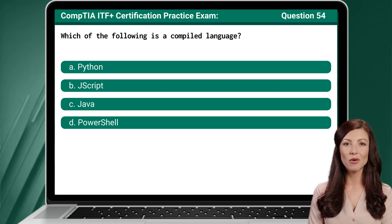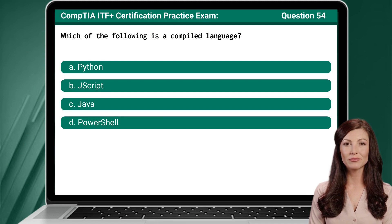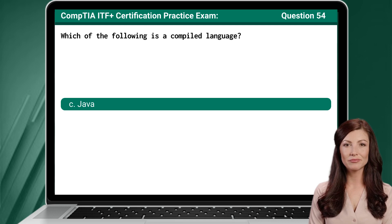Question 54. Which of the following is a compiled language? The answer is C: Java.